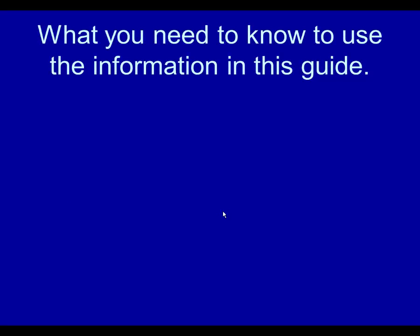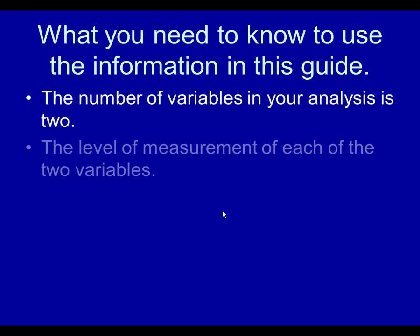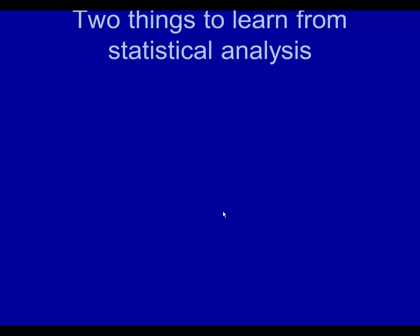What you need to know to use the information in this guide: the number of variables in your analysis is two in this particular presentation. You'll need to know the level of measurement of each of the two variables in your particular analysis. I'm assuming you know what level of measurement means — you have nominal, you have ordinal, and you have interval and ratio.